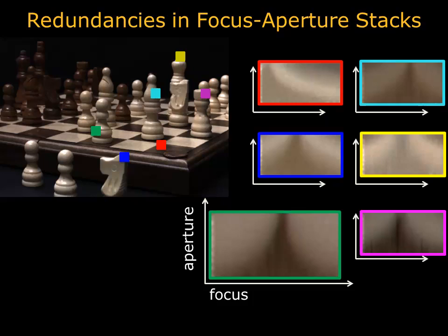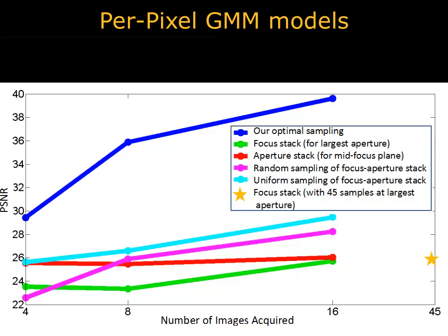Varying the camera's aperture and focus together yields aperture-focus images, which also exhibit similar structure and can be efficiently clustered. For our final algorithm, we use more general per-pixel Gaussian mixture models to capture the redundancy present. This allows us to greedily choose images that minimize reconstruction error, meaning we can learn which key images best represent the entire Epsilon photography stack.